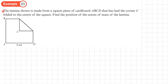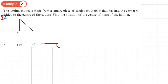Example 21: the lamina shown is made from a square piece of cardboard ABCD that's had corner C folded to the center of the square. Find the position of the center of mass of the lamina. I'm going to place this on a coordinate grid — the square is 4 by 4, so the fold point is at 2 in each direction.